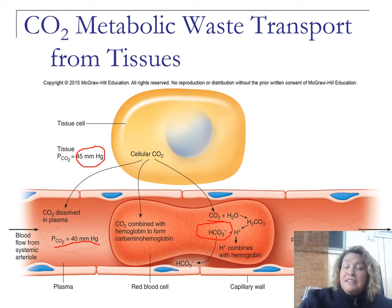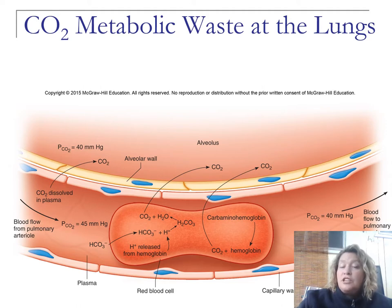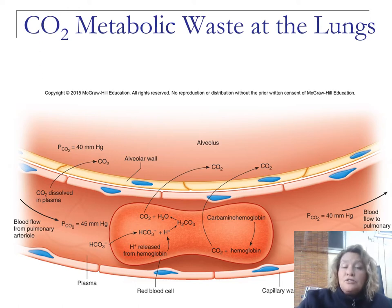At the lungs, the bicarbonate has to change back into CO2, so we reverse the equation. Bicarbonate diffuses back into the red blood cell and combines with a hydrogen atom to make carbonic acid, which then dissociates into CO2 and H2O. The CO2 goes into the alveoli. The CO2 from carbaminohemoglobin also dissociates back into the alveoli, and anything dissolved in the plasma enters the alveolus as well — because of the pressure differential.